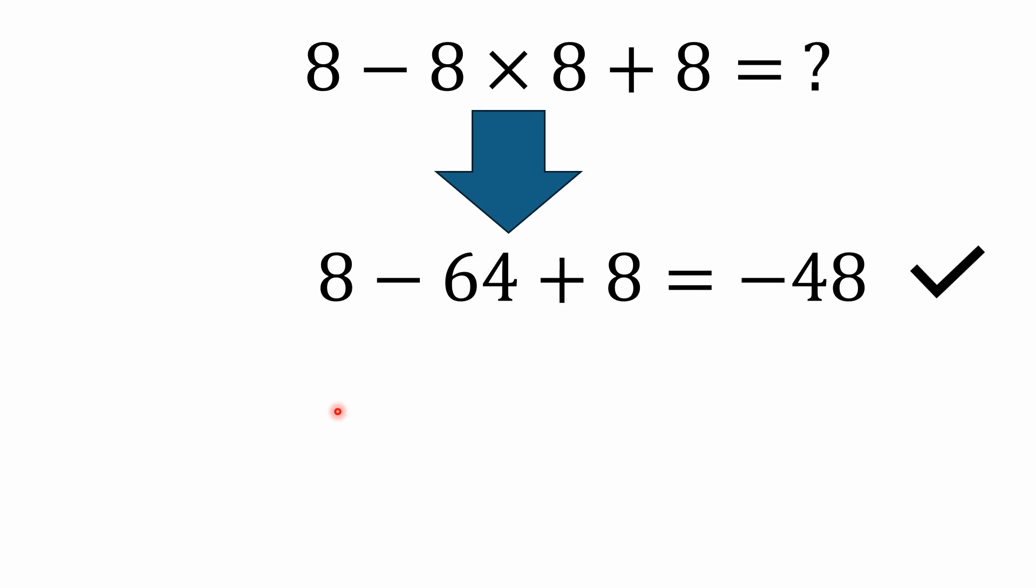That's how the order of operations works because multiplication is just shorthand for repeated addition. So you do the multiplication first. It's 8 times 8, which is 64, and then it's 8 minus 64, and then plus 8 equals negative 48.